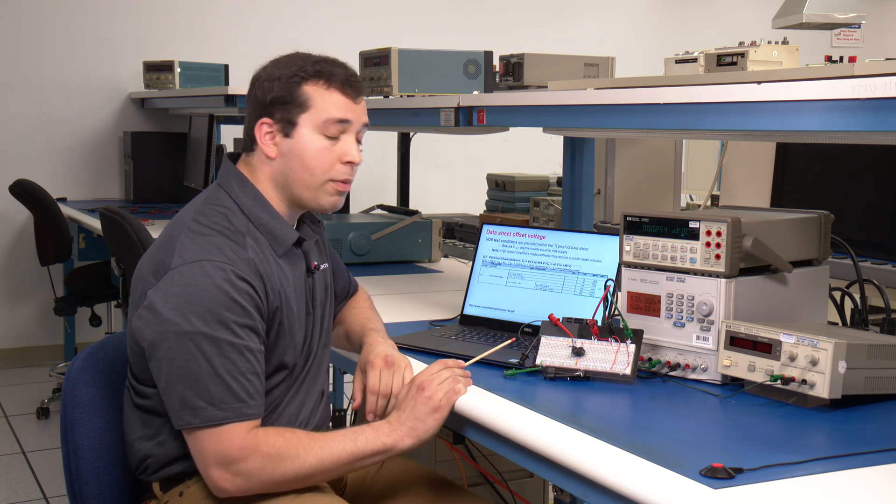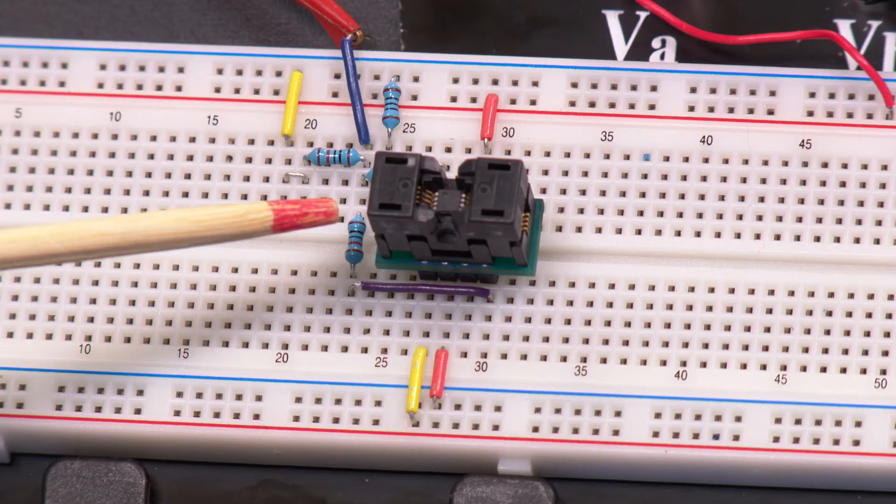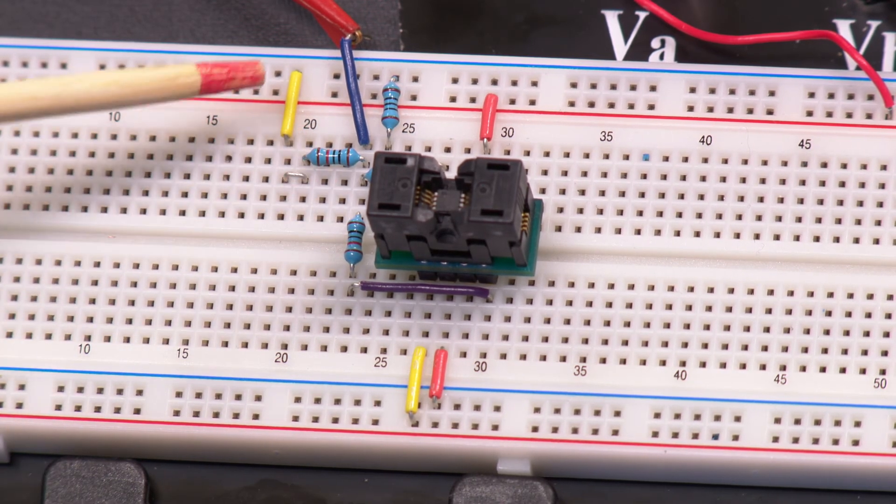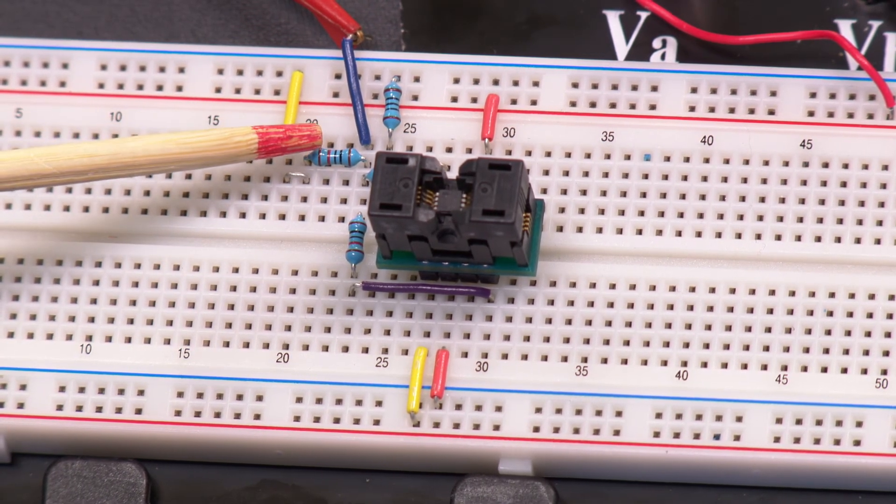In this example, we've set up our OPA 192 in the false summing junction circuit. We will be measuring the voltage at this node shown here.